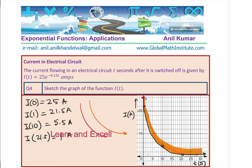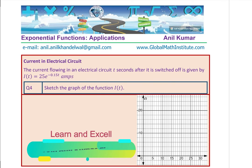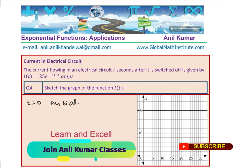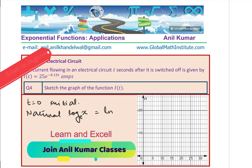I hope it is absolutely clear. In this question, we learned that t = 0 means the initial value, and importantly how to use natural log — which is log to the base e — to calculate the time when the current in the circuit was 1 ampere. We got a graph showing exponential decay. I hope you understand all these concepts. Feel free to write your comments and share your views. If you like and subscribe to my videos, that would be great. Thanks for your time, and in case you want to learn from me, you can always send an email on the address given. Thank you and all the best.